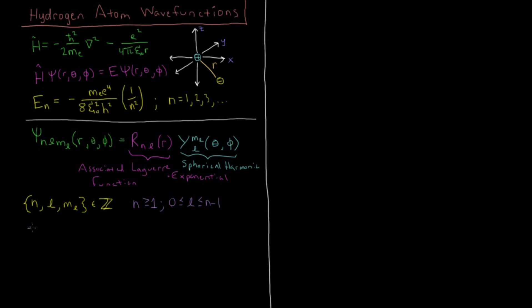And lastly, for m sub l, m sub l can be any value between minus l and l. So if l is 0, m sub l can only be 0. If l is 1, then m sub l can be minus 1, 0, and 1. So just like these l and m sub l are completely analogous to the j and m from the rigid rotor, they are the same quantum numbers coming from the same place because the potential energy is only radial. So essentially what you have is the rigid rotor in the angular coordinates theta and phi.